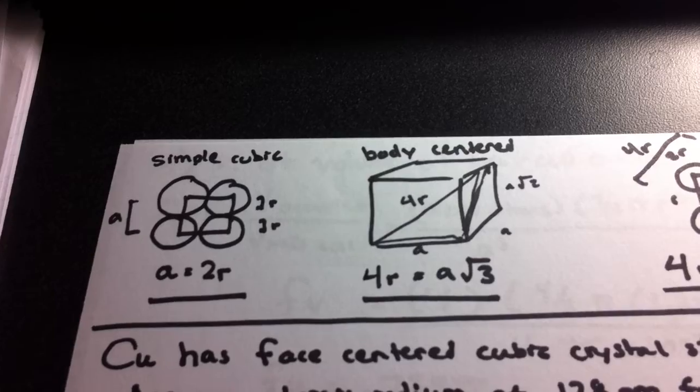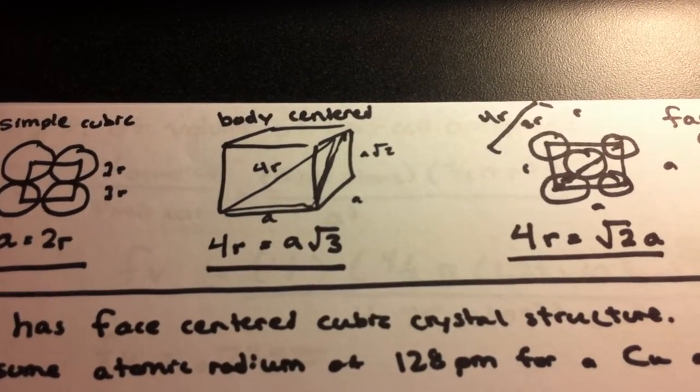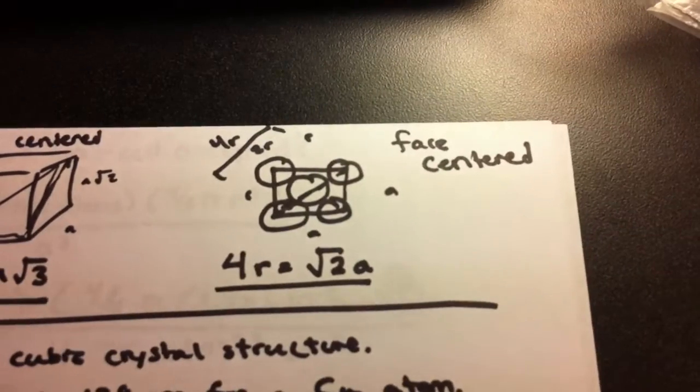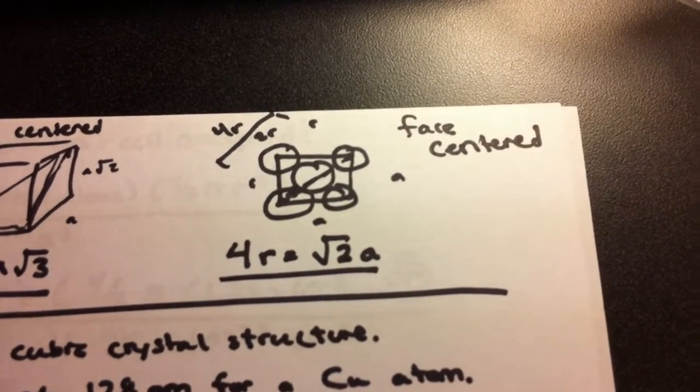So here's for simple cubic, a equals 2r. For body centered, 4r equals a root 3. And for the face centered, you're going to have 4r equals root 2 times a.